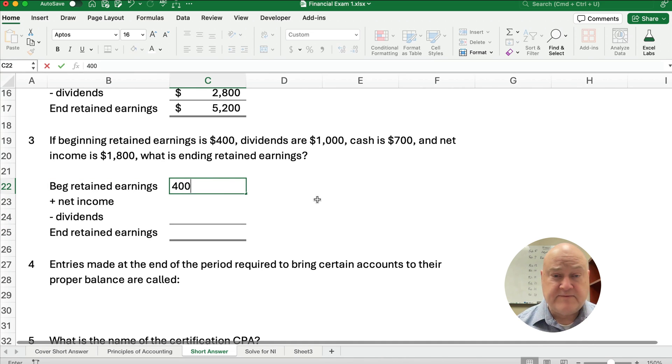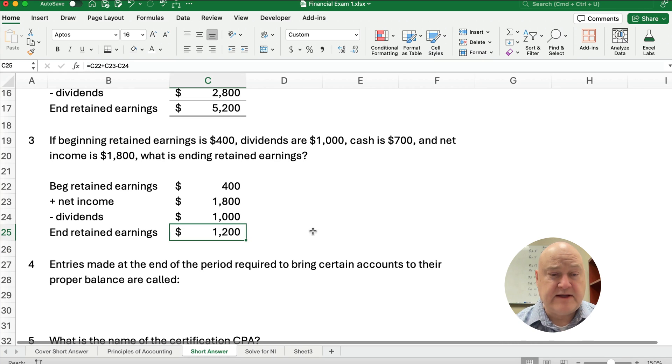Beginning retained earnings is $400. Dividends are $1,000. Cash is $700. Do we need this at all? No, we don't. That's extra information. One of the things you have to do is determine what information you need and what you don't need. So we can strike that out. We ignore the cash is $700. Net income is $1,800. So what is ending retained earnings? We just run the normal math: $400 plus the net income minus the dividends. So it looks like our ending retained earnings is going to be $1,200.